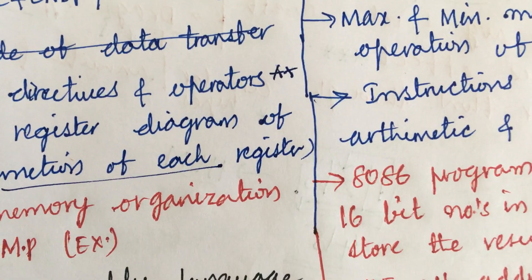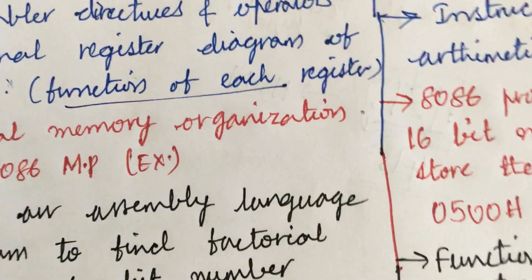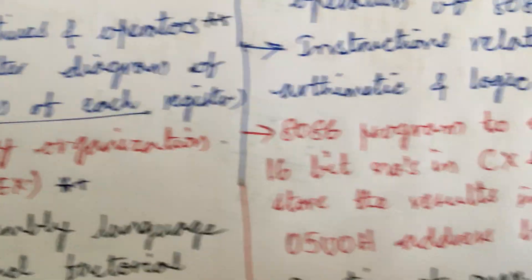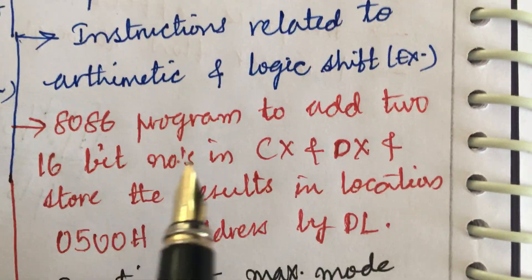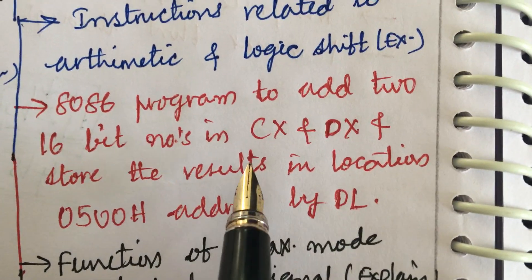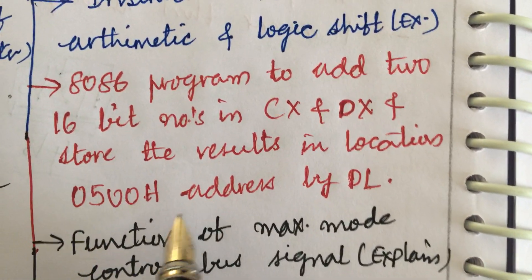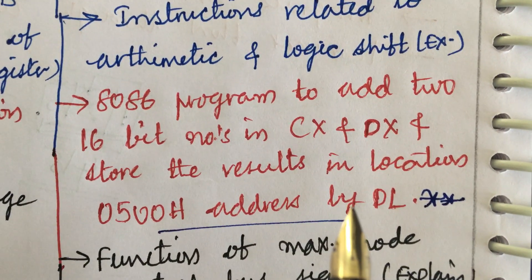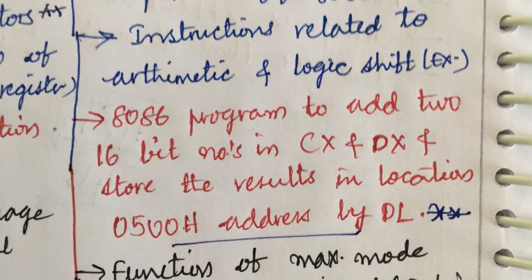This is all about Unit 3 and 4. I mean the 4, 5 and the 6, 7 questions are being asked from this questions. Physical memory organization of 8086 microprocessor and 8086 program to add, write a program to add two 16-bit numbers in CX and DX and store the results in location. Such type of questions may be the damn sure this time. Hope you are taking very well your exams.